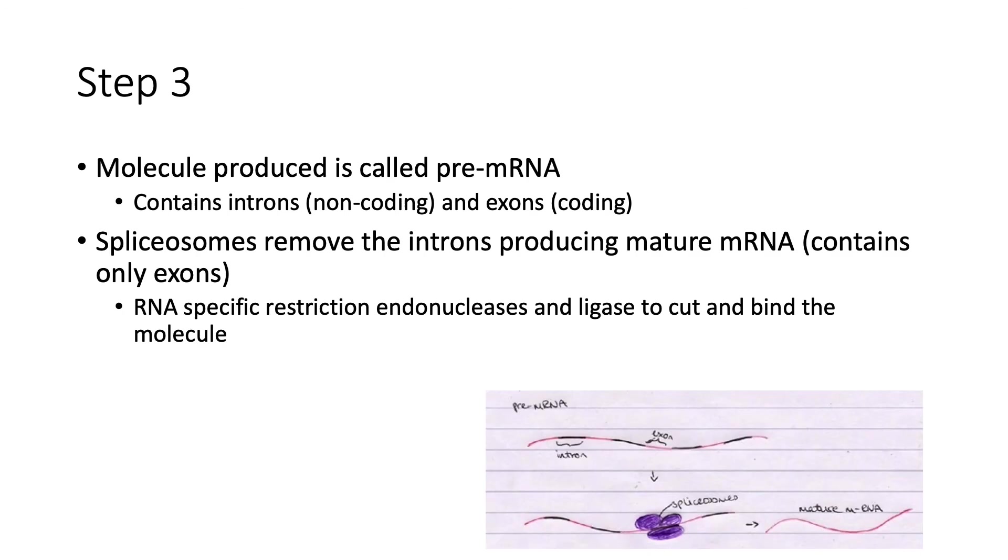Spliceosomes come along and remove the introns to produce mature mRNA. Spliceosomes contain RNA-specific restriction endonucleases, which cut the introns out, and then RNA-specific ligase binds the molecule together to produce a mature mRNA which only contains exons.